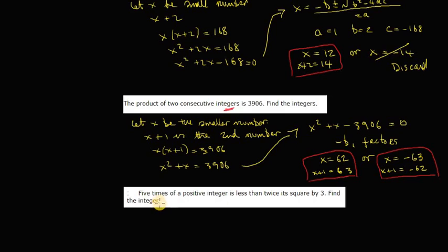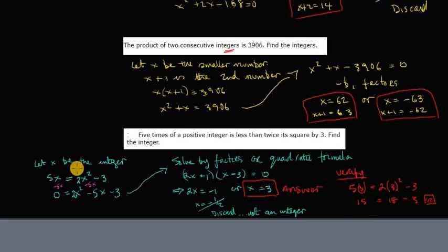So now why don't you finally try to work out what this one is. Try to work out the algebra equation for this and then solve that. And press play to see what the solution is in a moment. Okay, here's the solution. I said let x be the integer and then 5 times of a positive integer, which is 5x, is less than twice its square by 3.